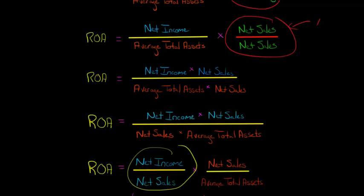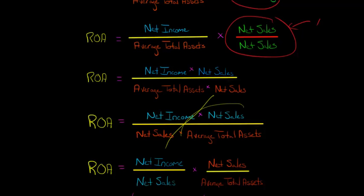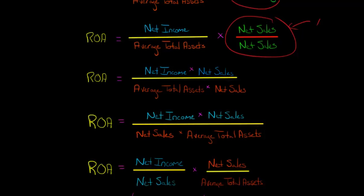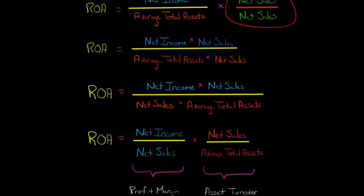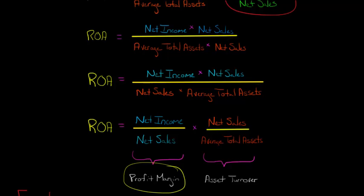We can break this into two parts. The first part is net income divided by net sales — that's right here. The second part is net sales divided by average total assets. This combined form is equivalent to what we had before. Now, net income divided by net sales has a name: we call it profit margin.